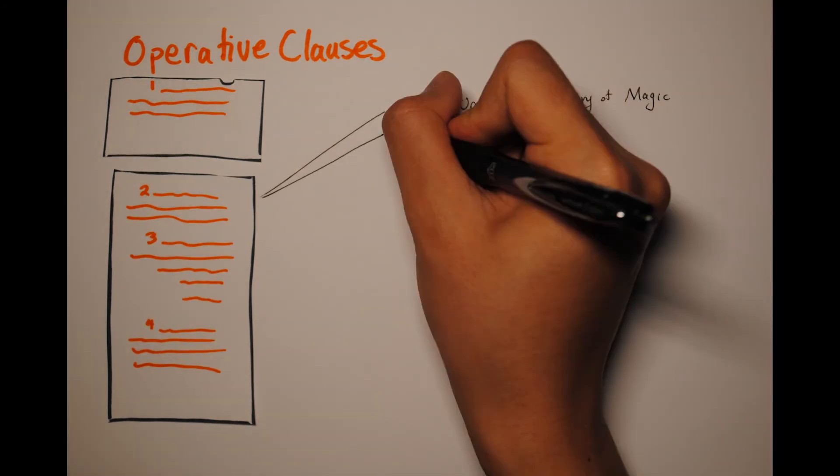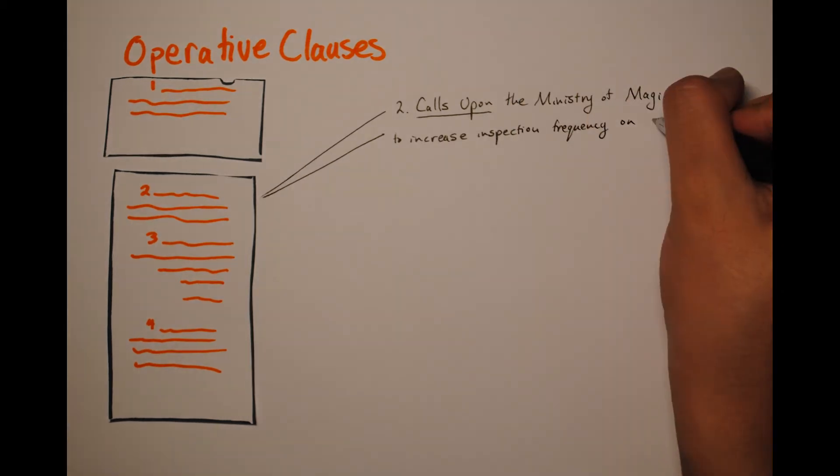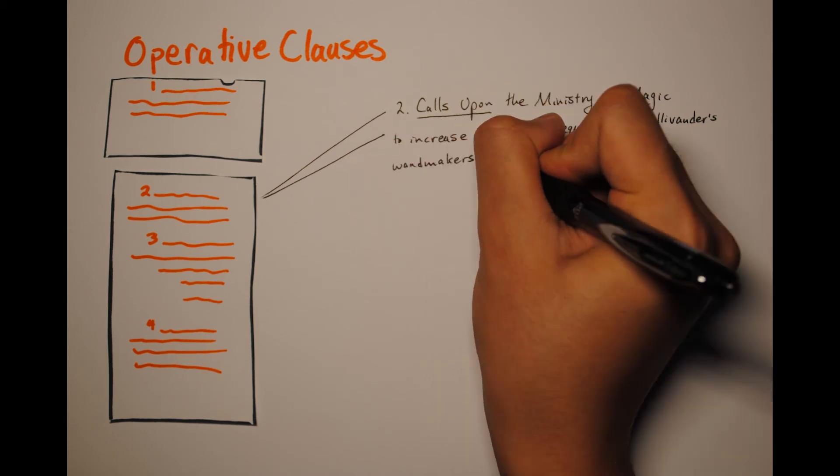Operative clauses are numbered, so start each clause with a number and an underlined operative phrase, like declares or calls upon. Again, a complete list of operative phrases can be found on our website.